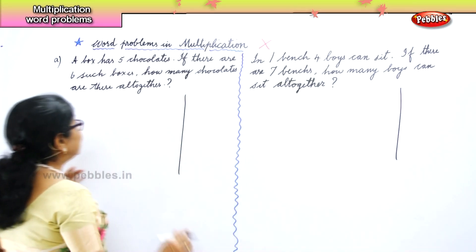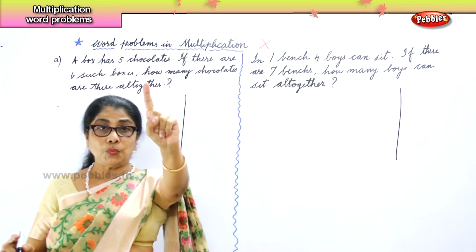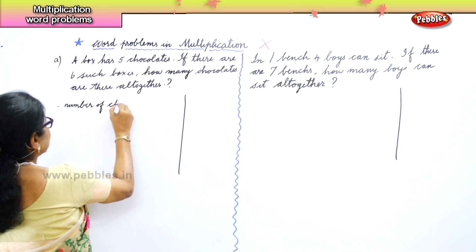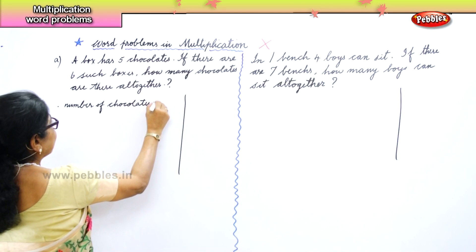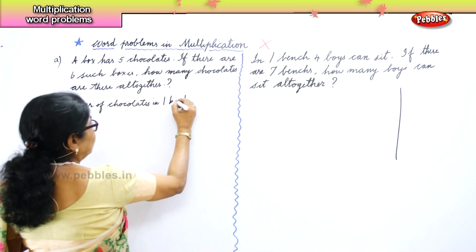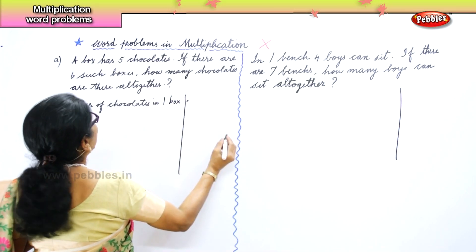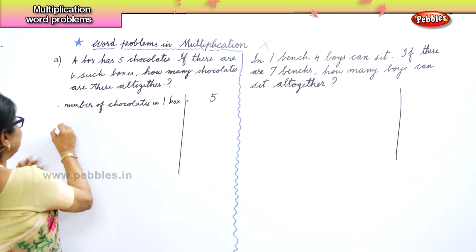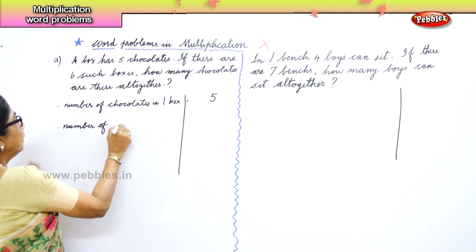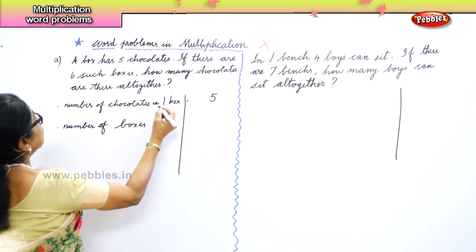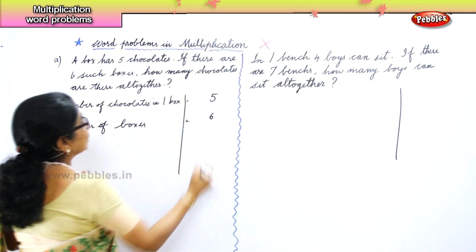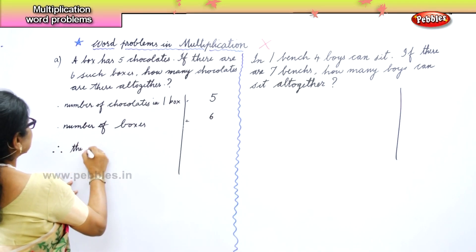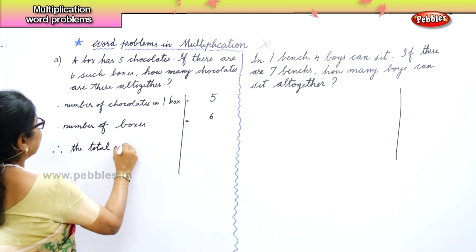So we are going to write three statements. First statement: number of chocolates in one box equals five. Second statement: number of boxes equals six. Third statement — therefore — the total number of chocolates.